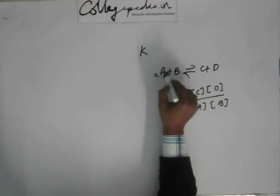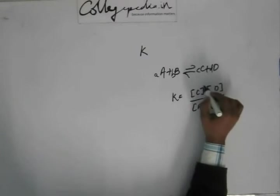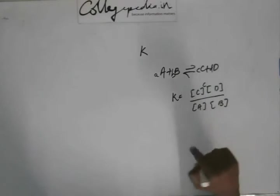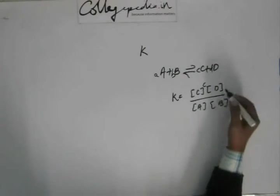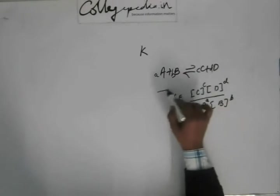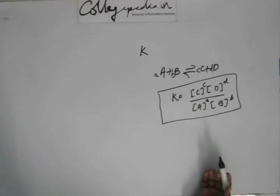Suppose you have a coefficient A here, B here, C here, D here. Then you raise the power. The coefficient of C is small c, then you raise the concentration of C to the power of c. Similarly, D, D and A. This is the expression of K. This is how you define equilibrium constant. This is the definition of K.